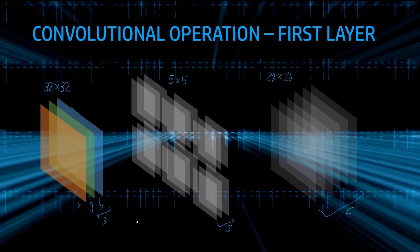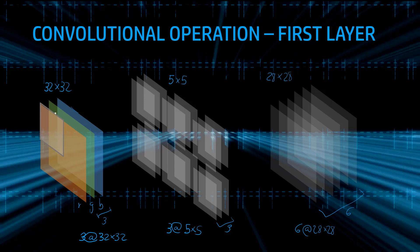The notation commonly used puts the channels first. For example, to represent this image we put three for the channels, then the pixel dimensions of the image. The filters will be three by five by five, and the output will be six by 28 by 28. Each filter is applied to the image, iterating through all the channels.